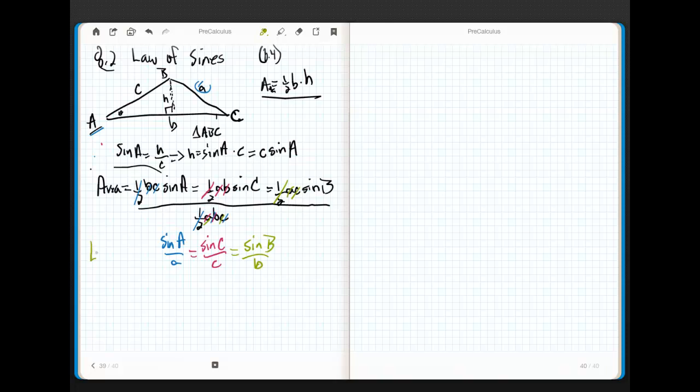Sine C over C. Similarly, look at this. When I divide this guy, the one-half goes away. This A goes away, and this C goes away, and I'm left with sine B over B. This is the law of sines. That's it. Isn't that beautiful? It's so simple. It's so elegant. It's easy to make. Alright?